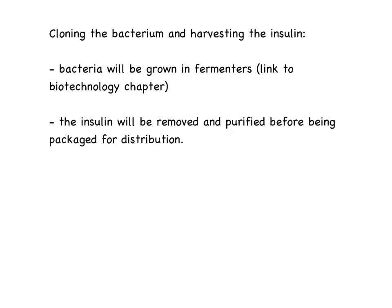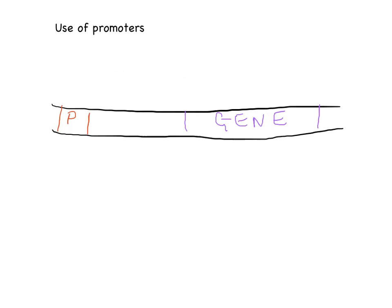The bacteria will be grown in fermenters, and then insulin will be removed and purified before being packaged for distribution. It's important that when the gene is transferred to the plasmid, it isn't just the gene alone — there is also a promoter on it. The reason for this is that RNA polymerase has to attach to the promoter, and it's from there that it then moves to transcribe the gene. If you don't have the promoter, there's no way for the RNA polymerase to bind, and so the gene will not be transcribed.